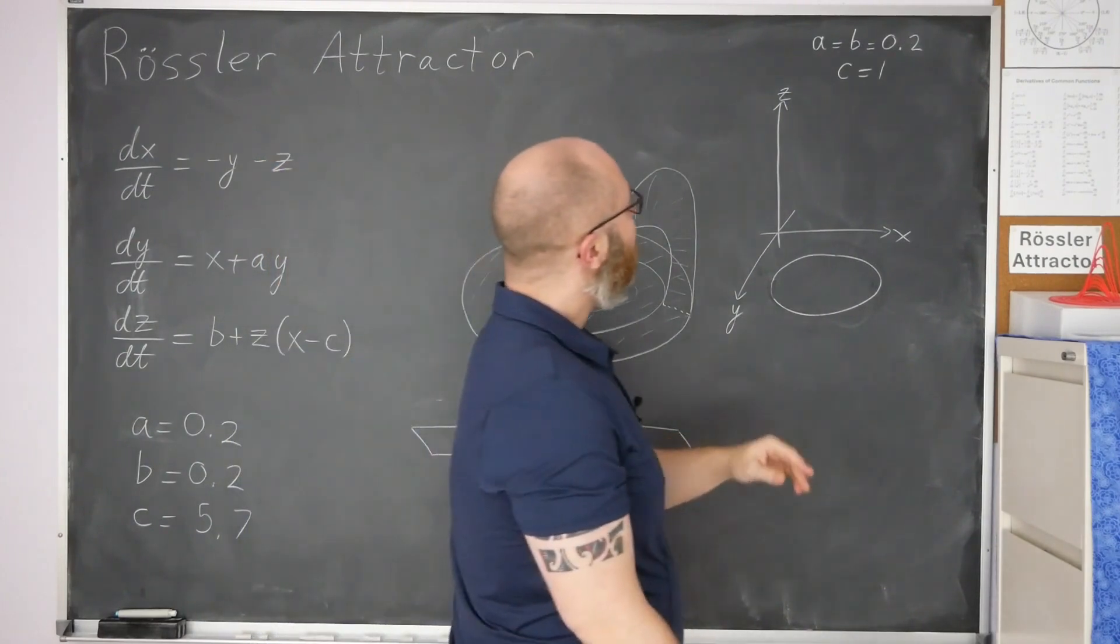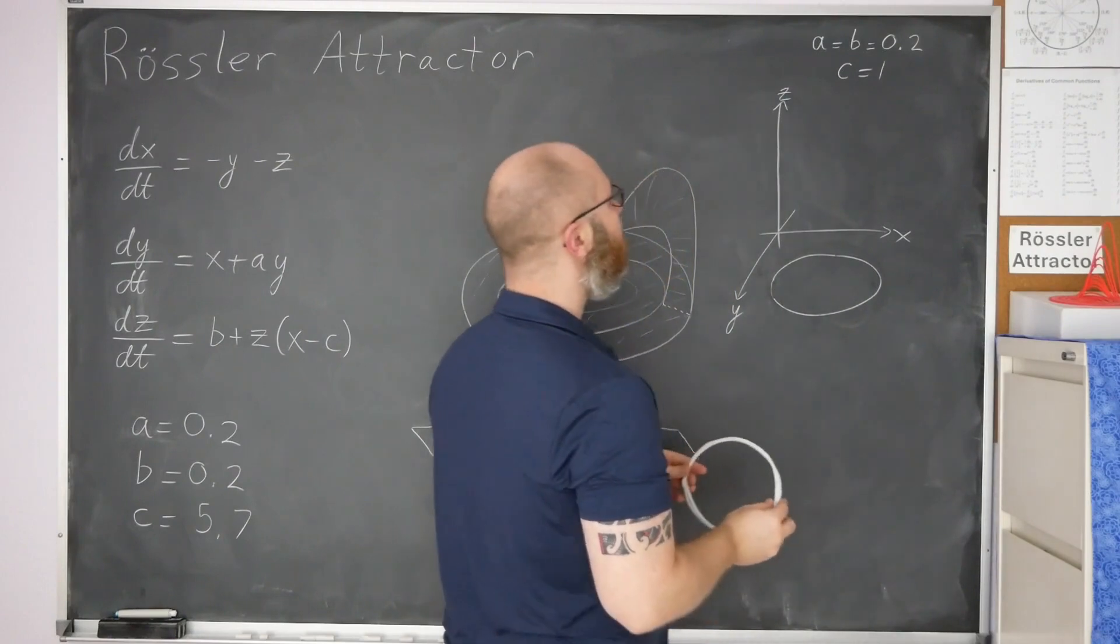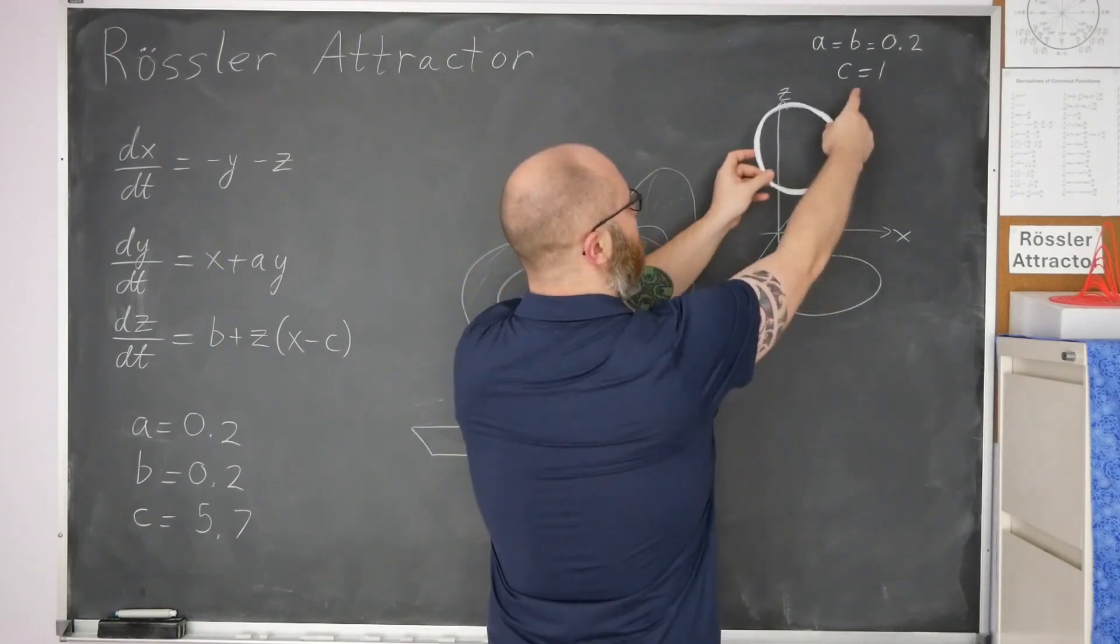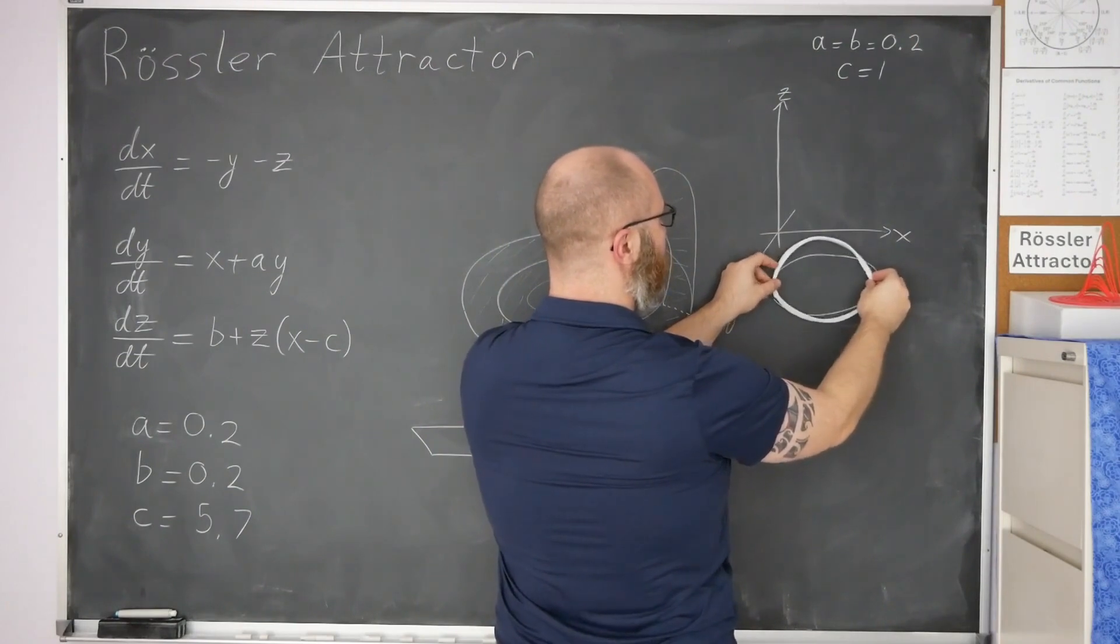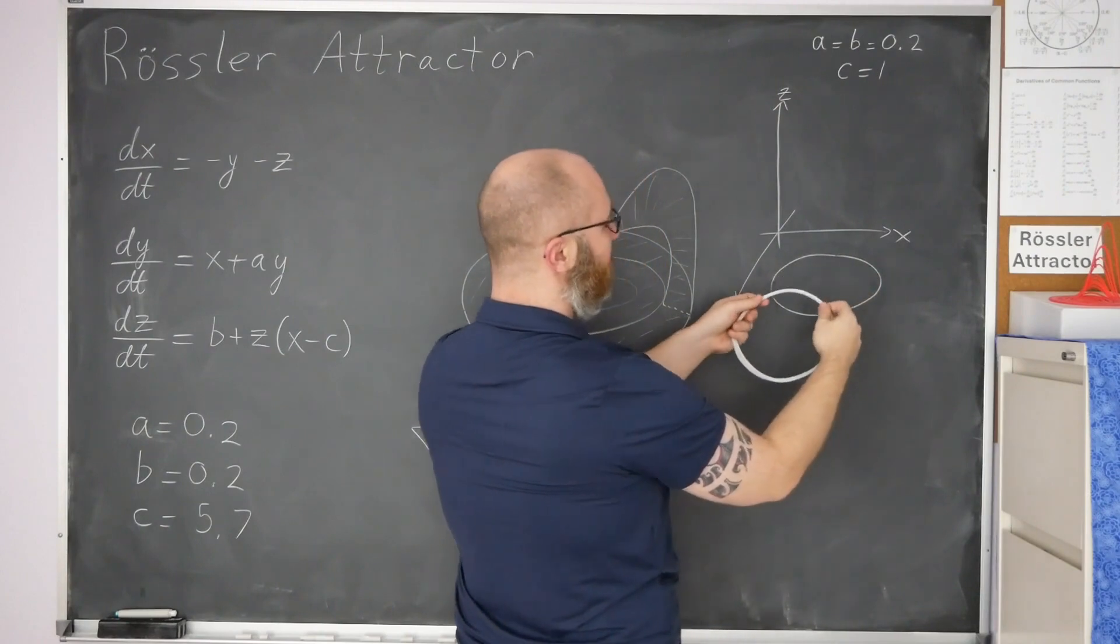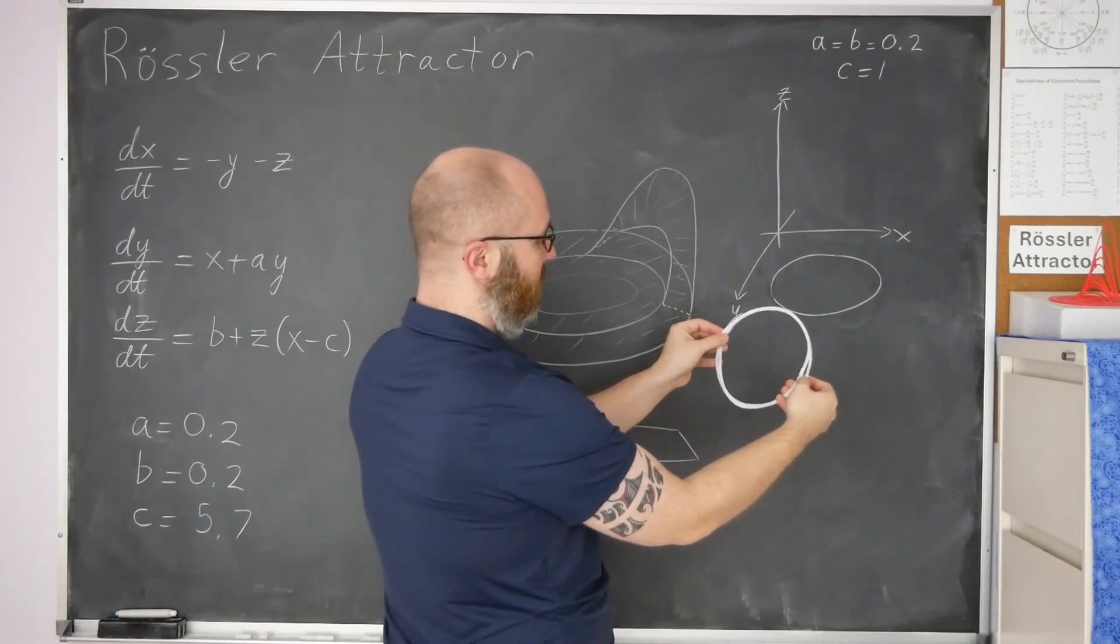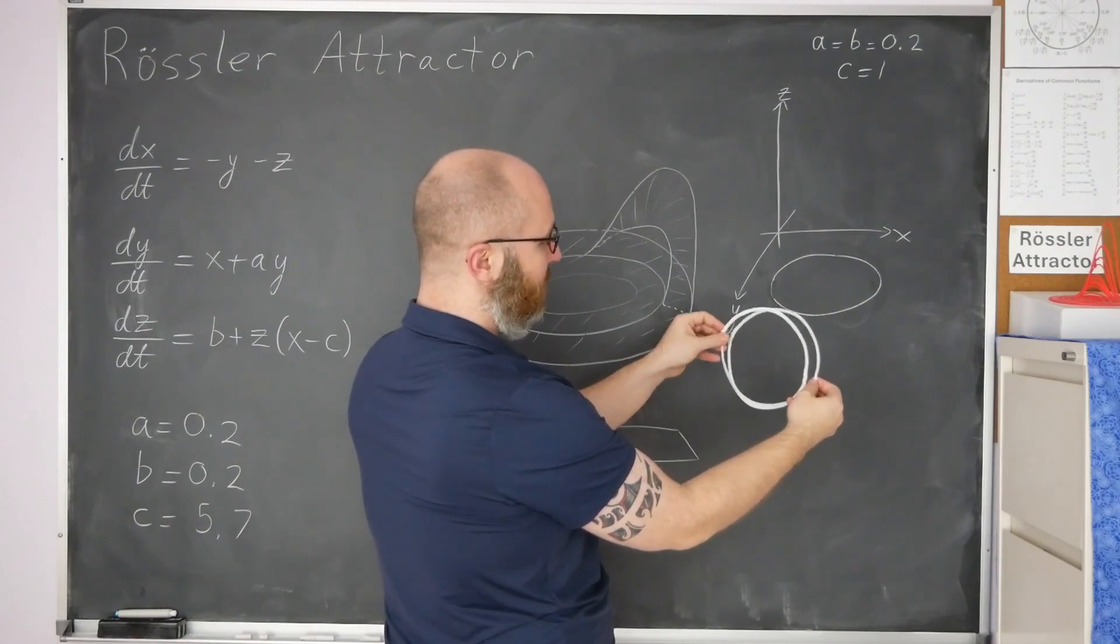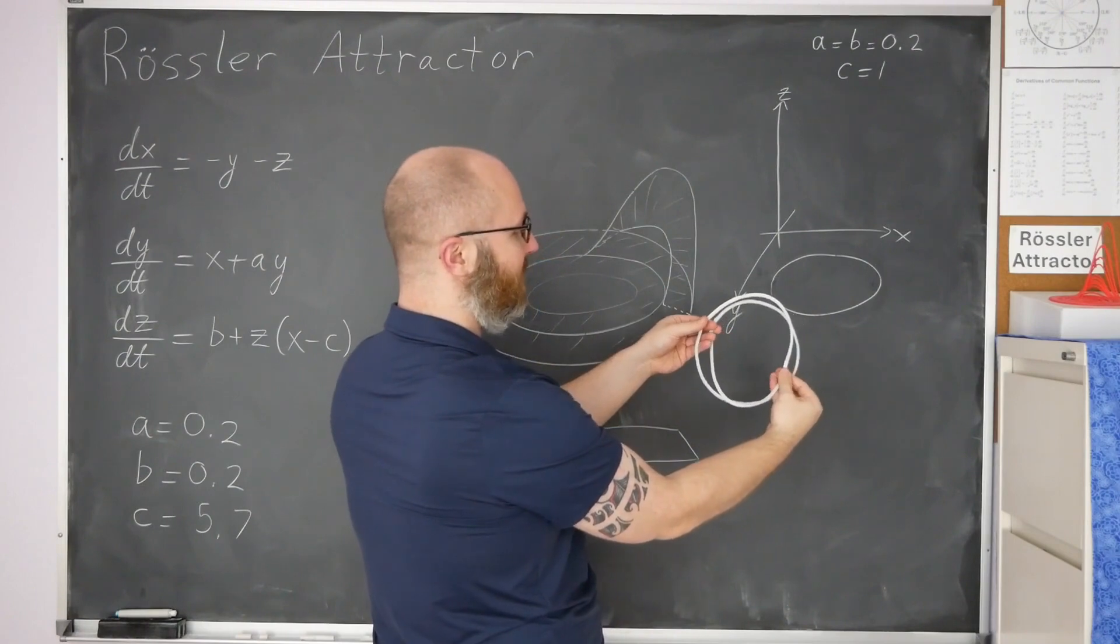The way that happens, which you'll see in the next video with some computer drawings, is essentially, c equals 1, you start out with this loop on the bottom, and as c gets bigger and bigger, the loop will deform as c increases. There's going to be a critical value of c where the loop actually becomes twice as long all of a sudden. It kind of separates from itself, but not into two pieces. It separates kind of along its length and becomes twice as long.